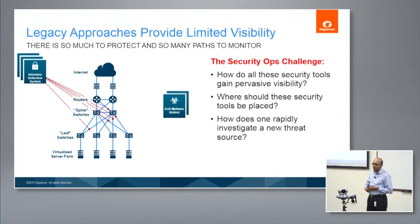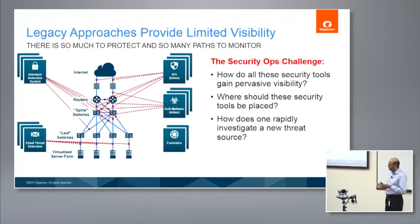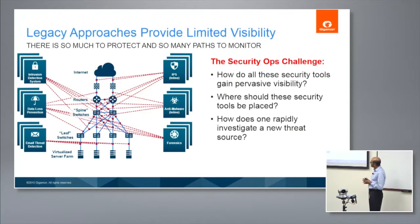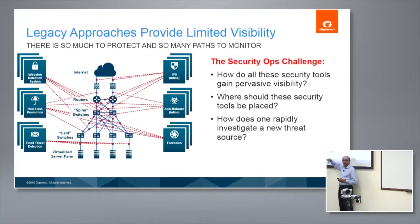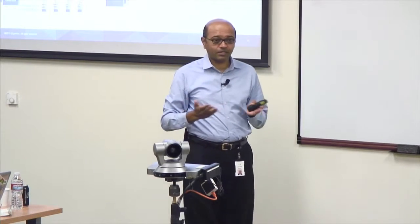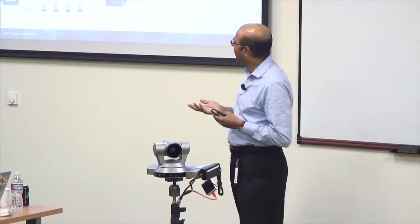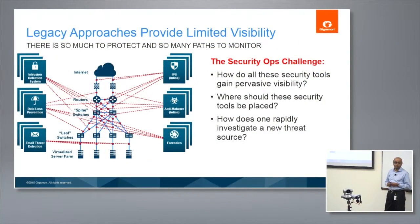This is typically how organizations build out the tooling infrastructure, whether for security or application performance management. Looking at the security challenge specifically, there's so much to protect and so many links to monitor. Attacks today are not just coming from the perimeter — you have to look within. When you talk about lateral movement, in networking terms that's classic east-west movement, masquerading as attacks.